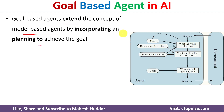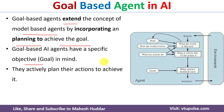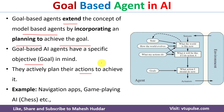In a goal-based agent, the agents have a specific objective or goal in mind. Whenever they select an action to be performed on the environment, they keep this objective or goal in mind and then select an action, rather than just selecting an action randomly.